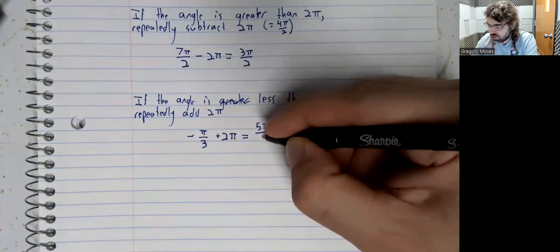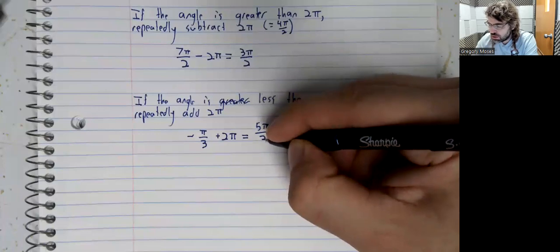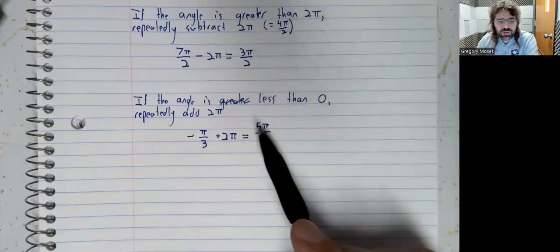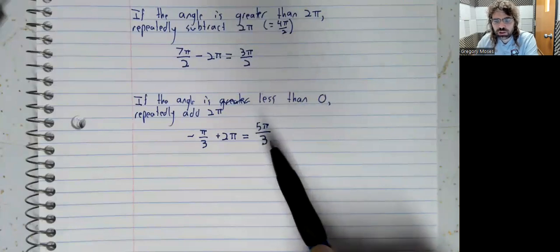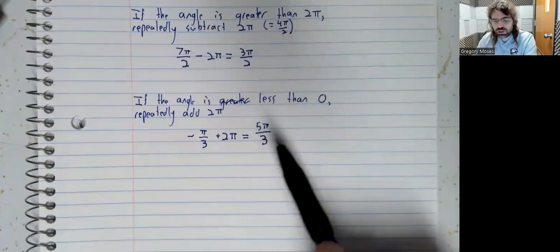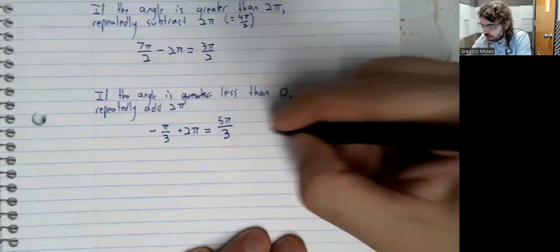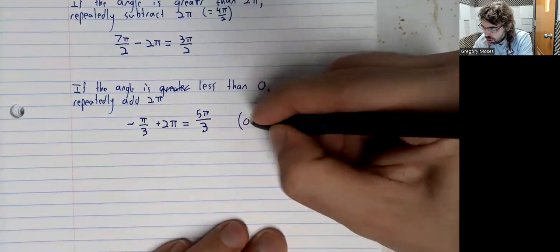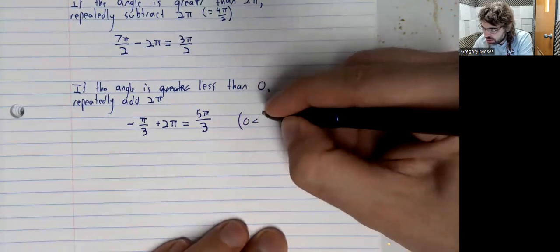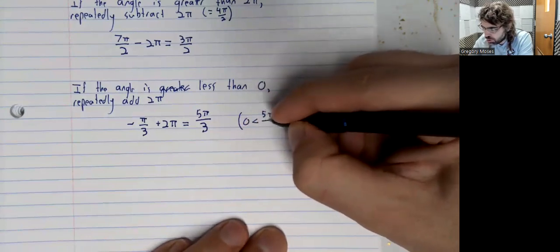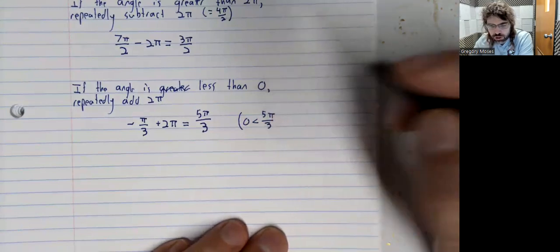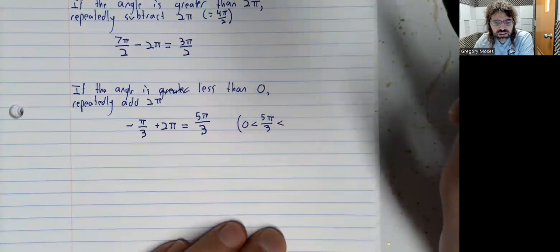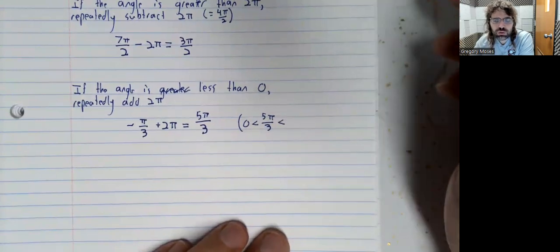In this case, you just have to add 2 pi once. 5 pi over 3 is between zero and 2 pi. I hope it's obvious that a positive number is greater than zero. If it's not obvious that it's less than 2 pi, get a common denominator.